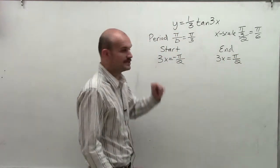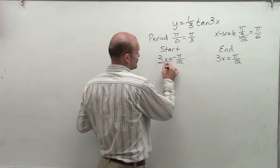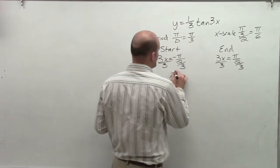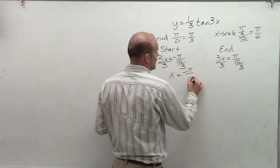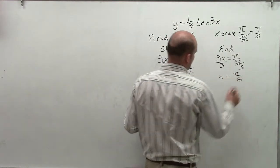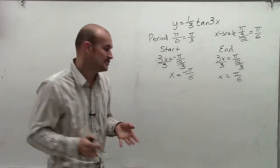Therefore, now what we're going to do is simply solve for x. We're going to divide by 3. And therefore, the start is going to be x equals negative pi over 6, and x equals pi over 6. So those are going to be my two starting points.